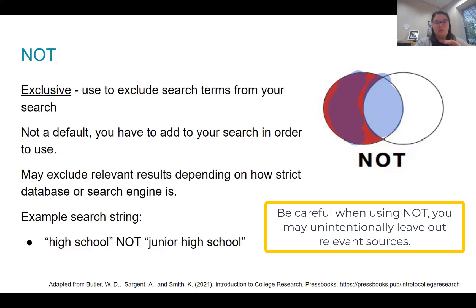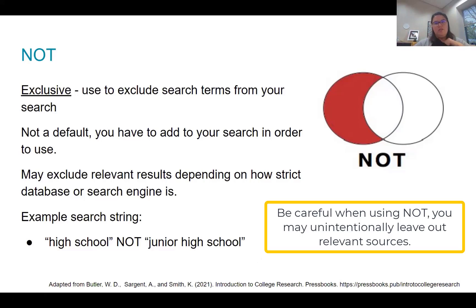Some databases are a little bit more lenient, and some are very strict about exactly what you want. An example search string would be something like 'high school NOT junior high school' — if you're looking at students dealing with divorce and GPAs in high school, and you want to keep them to a more specific age range.